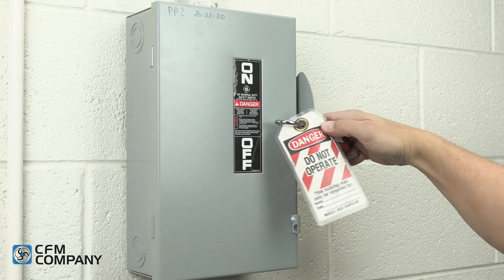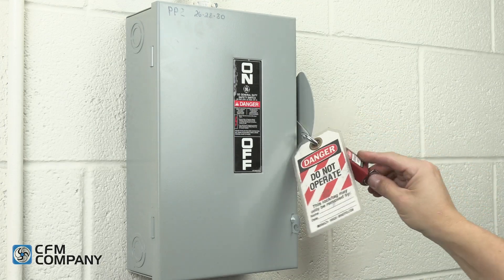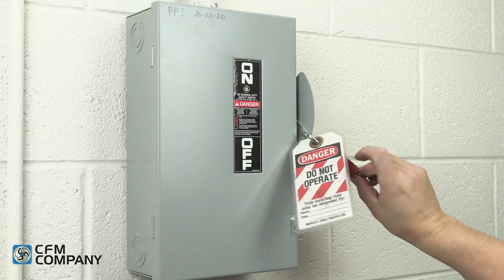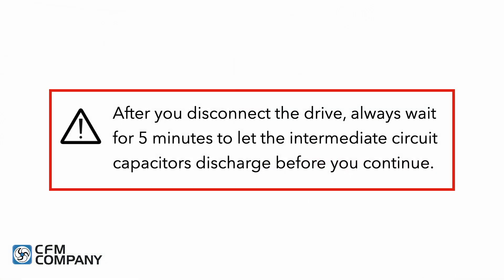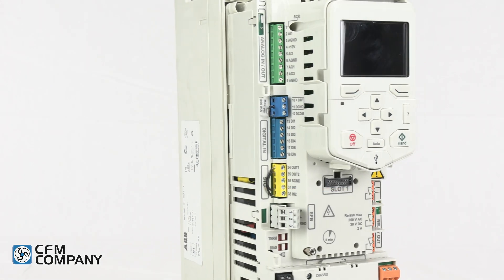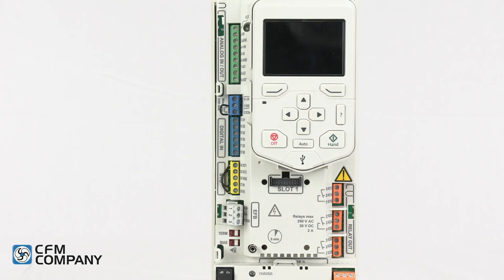Lock and tag out the circuit disconnect and make sure that reconnection is not possible. Always wait 5 minutes to let the intermediate circuit capacitors discharge before you continue. Remove the front cover to expose the control terminals.